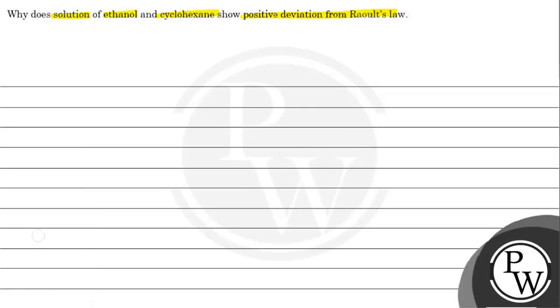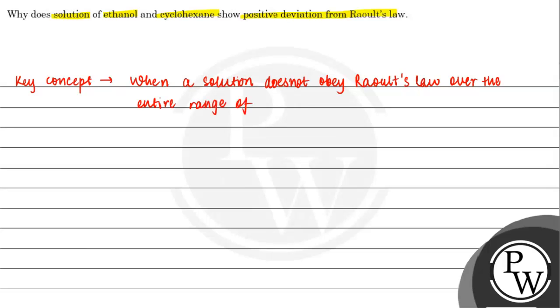So first, let's understand what is positive deviation. The key concept of this question will be: when a solution does not obey Raoult's law over the entire range of concentration, then it is called non-ideal solution.